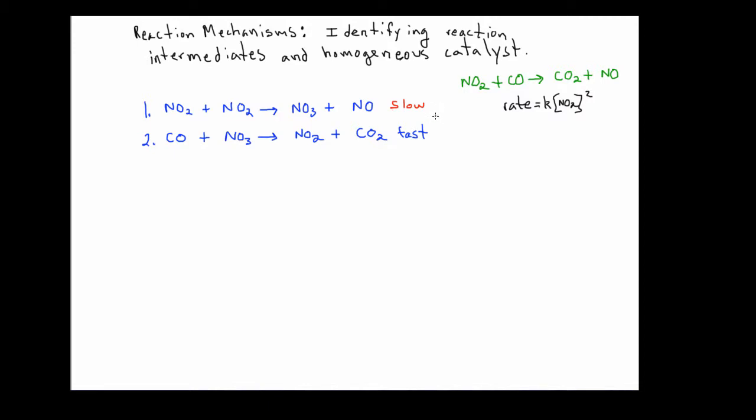What that means and then how we evaluate those elementary steps in order to determine whether or not this proposal or hypothesis actually matches the experimental rate law that has been determined for the kinetics of a particular chemical reaction. And what I would like to do in this video is address the concept of chemical intermediates and homogeneous catalysts before we move on to the next major area, which is evaluating a series of elementary steps where the rate limiting step is not the first step.